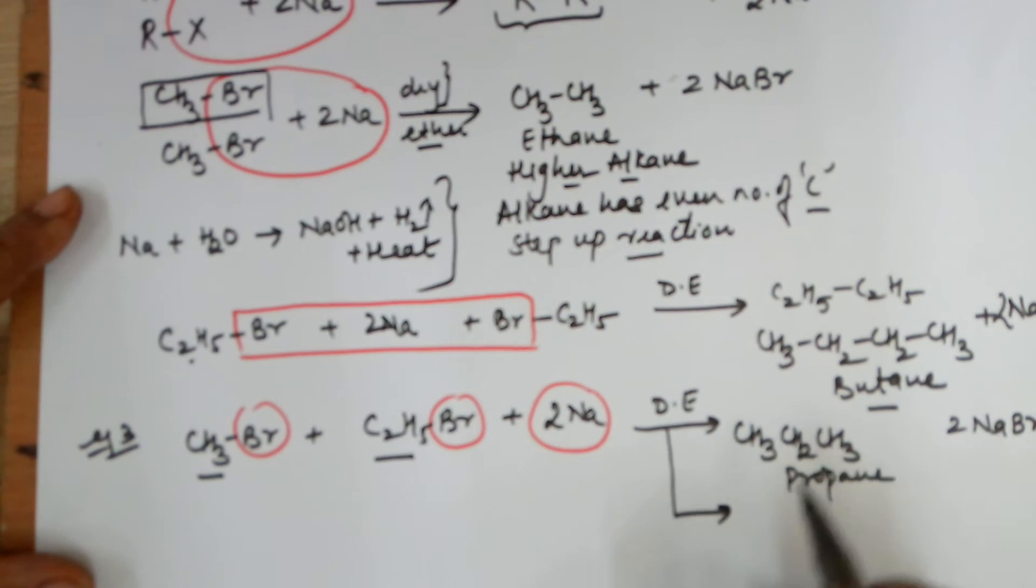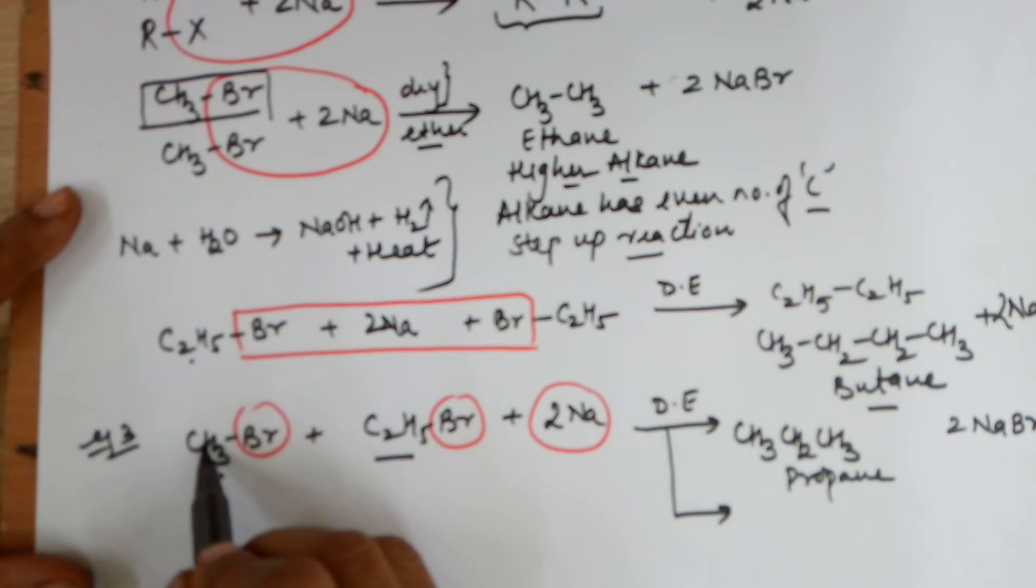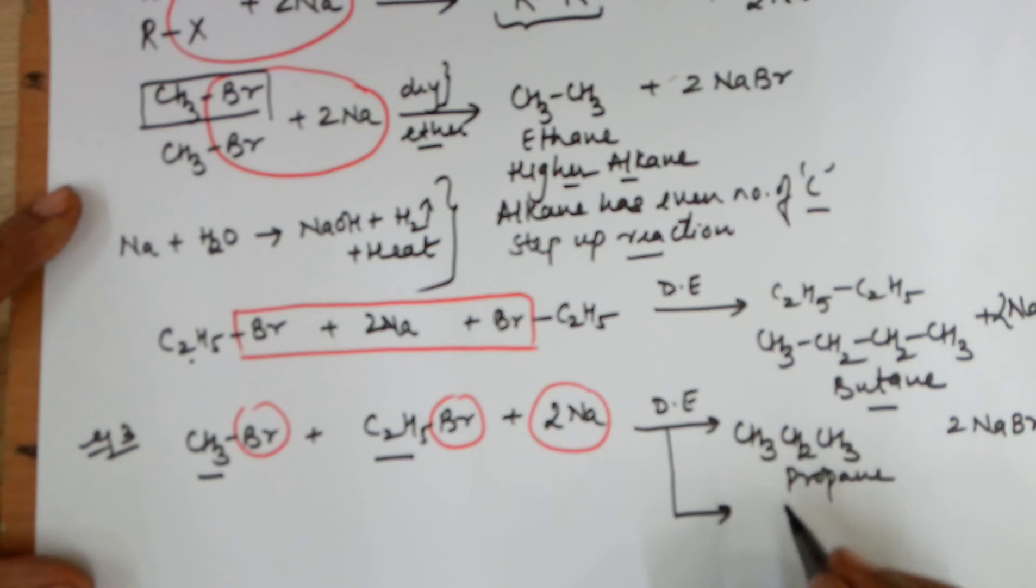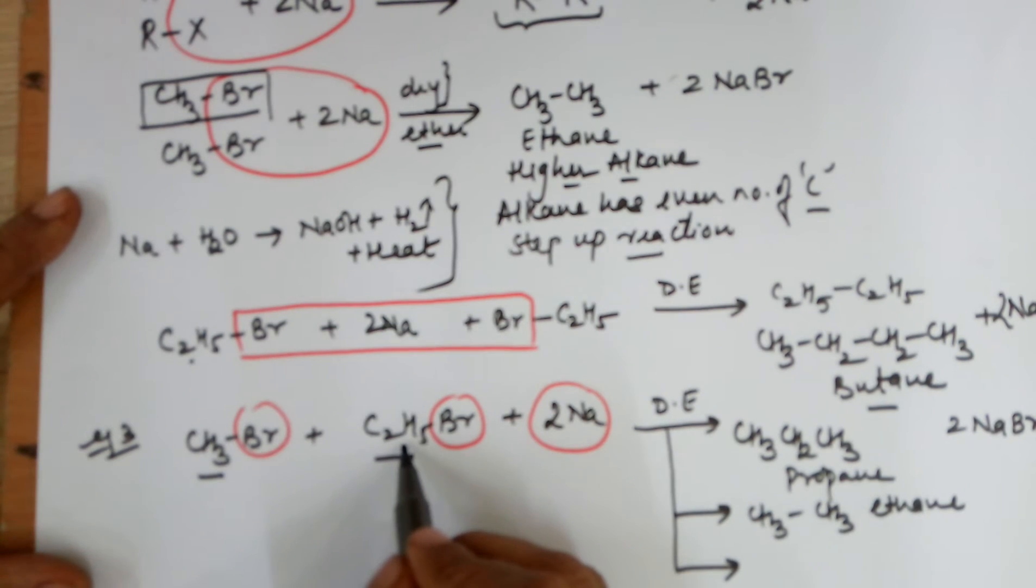In this case there is possibility of this product formation if one molecule of methyl bromide combines with one molecule of ethyl bromide, but there are chances that a methyl bromide molecule may be reacting with another methyl bromide molecule leading to ethane formation. Thirdly, the third possibility is an ethyl bromide may be reacting with another ethyl bromide leading to a butane molecule.